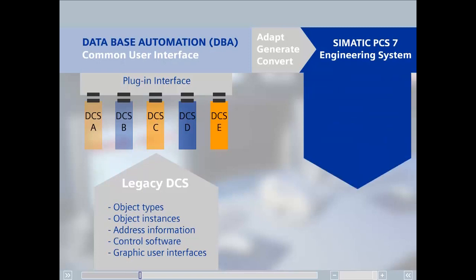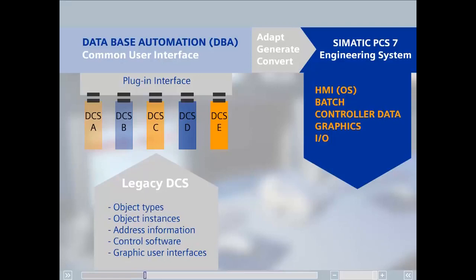DBA allows migration of OS, batch, and controller data and creates a consistent look and feel for every control system migration. DBA is, of course, fully integrated in the engineering system of Simatic PCS7, allowing genuinely uncomplicated and homogenous migration to the PCS7 target system.